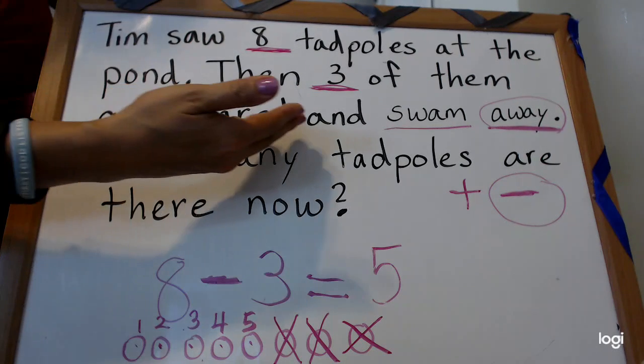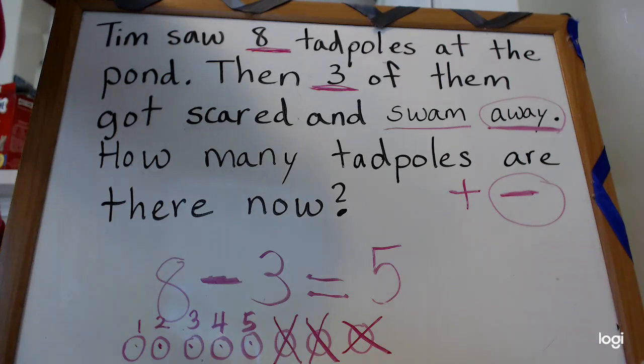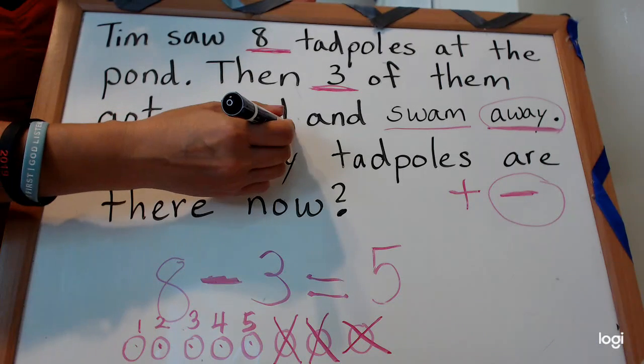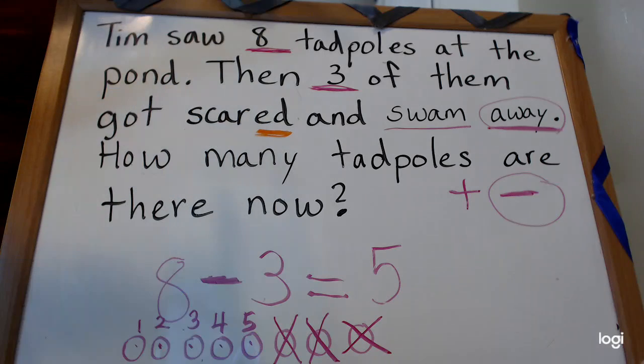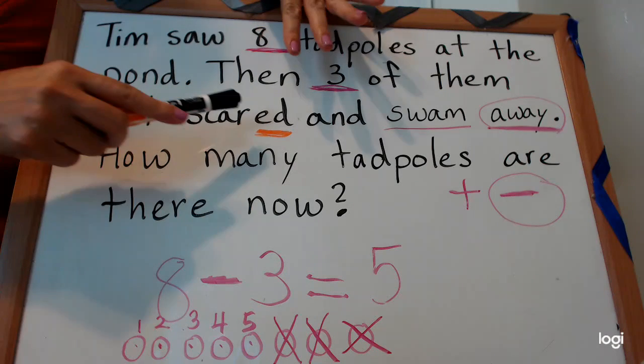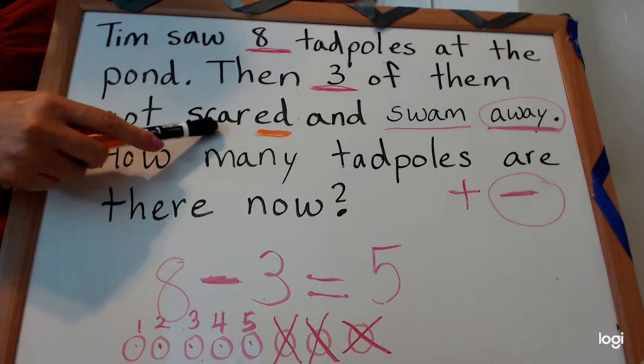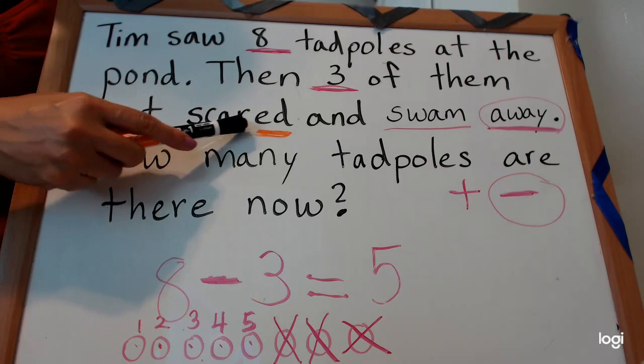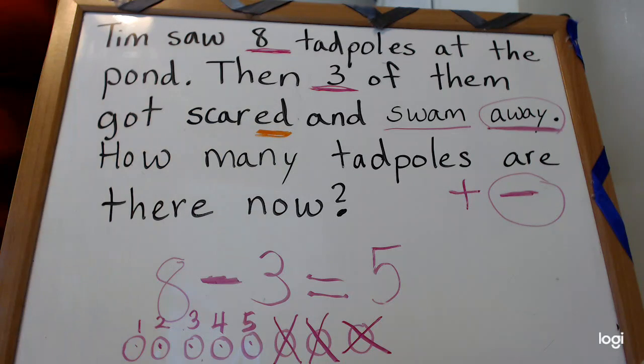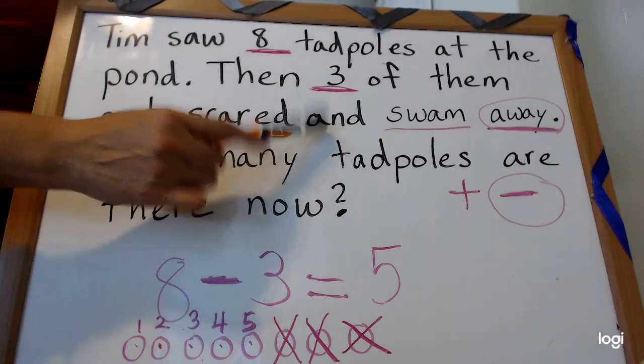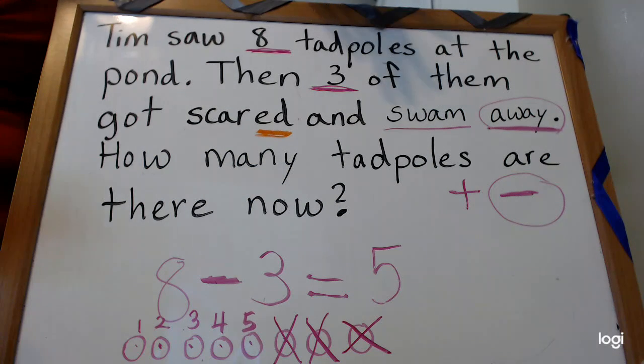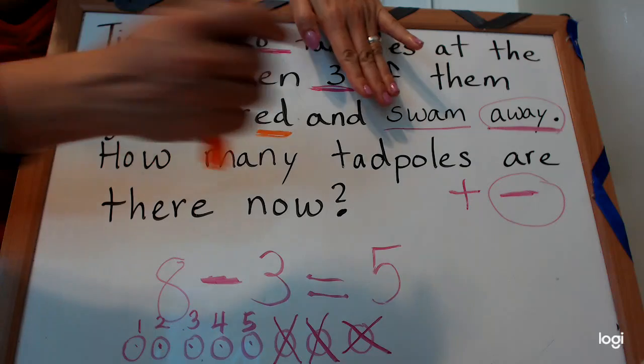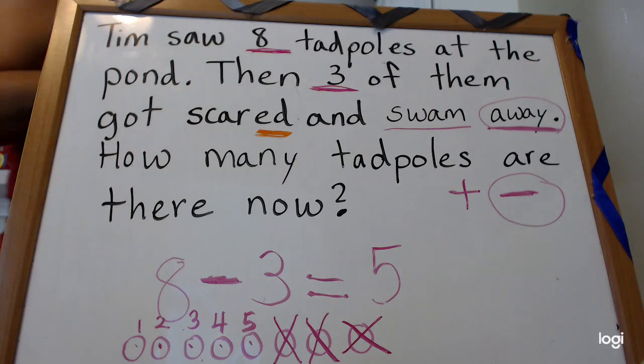This word is a little bit tricky. We do have an ending right here that we know. Words that end with E-D makes the 'T' sound, right? So, and we have a blend, 'scared'. And 'and' is your power word. And then let's solve this word. S and W is a blend, so, and 'am', 'swim'. See how you can solve words so easily?